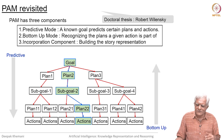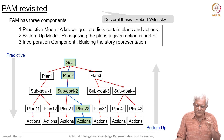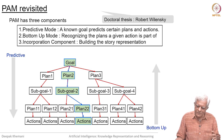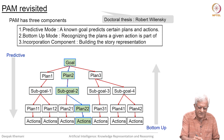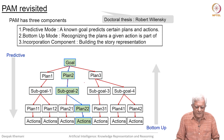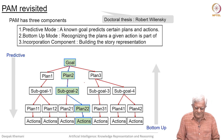PAM tries to understand the story by inferring which plan was active and which sub-goal was active and so on. For example, what we have seen in blue is plan 2 with sub-goal 2 essentially.